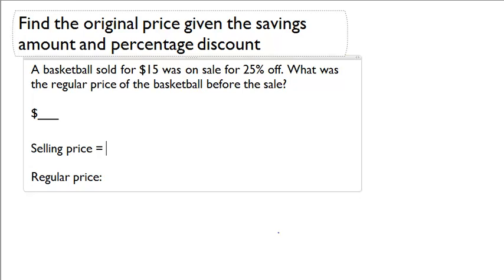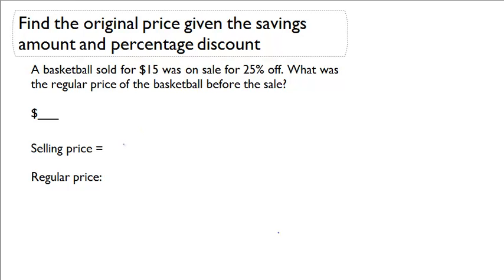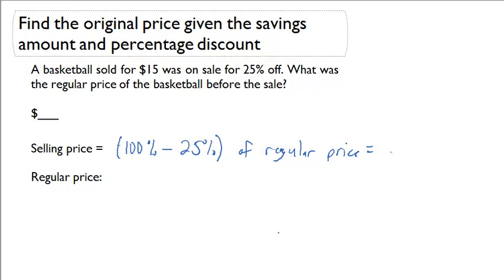Here we need to figure out a relationship between the selling price and the regular price. Let's start off with putting the selling price in terms of the regular price. The selling price has to equal 100% minus 25% of the regular price, which means it has to be 75% of the regular price.